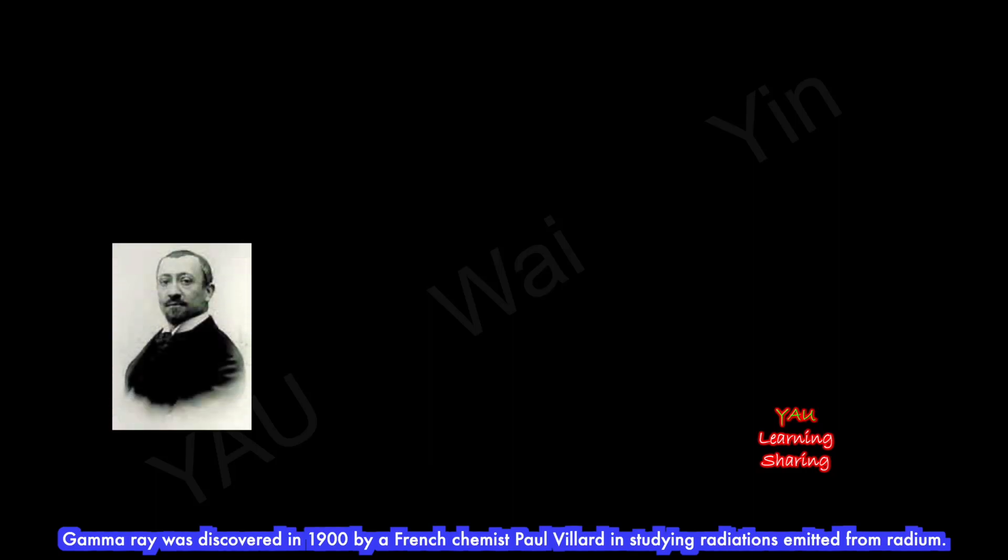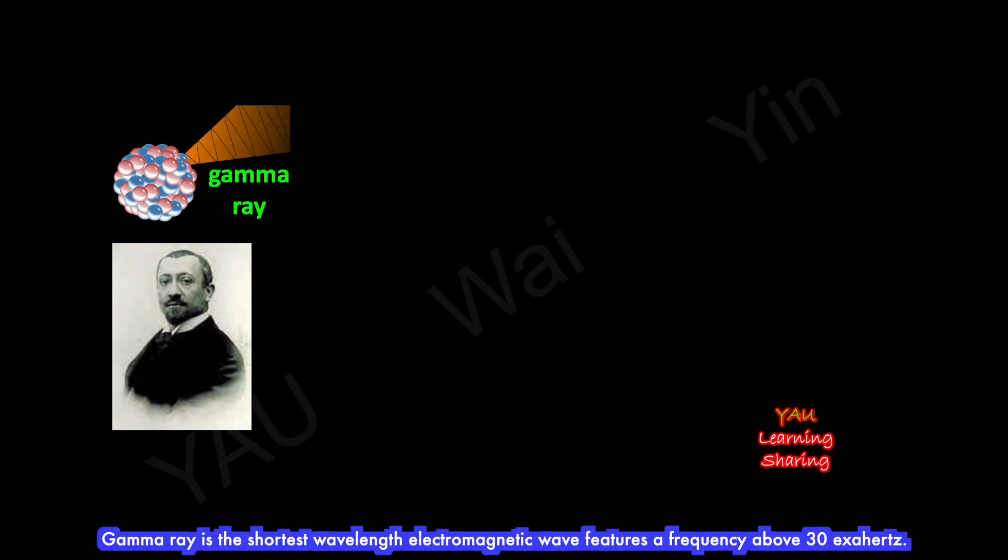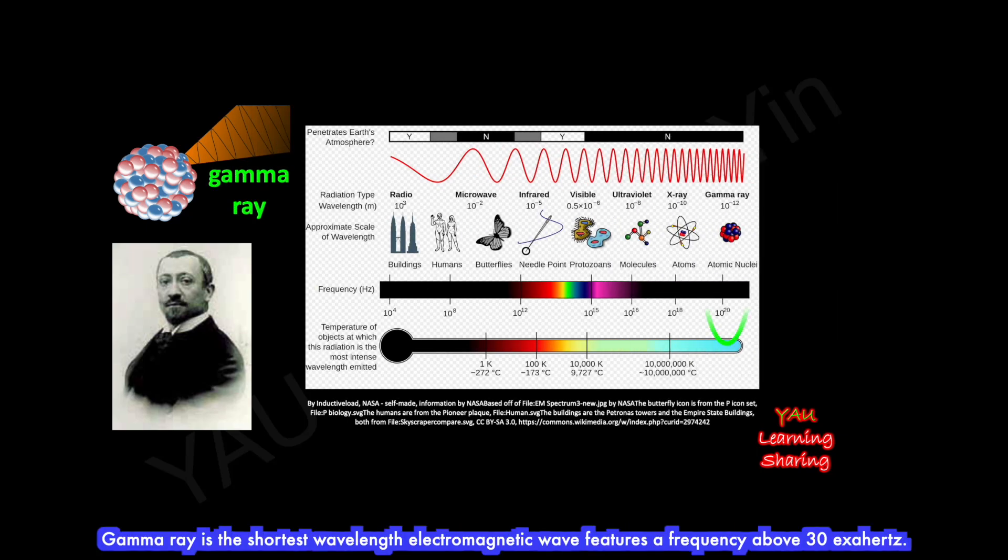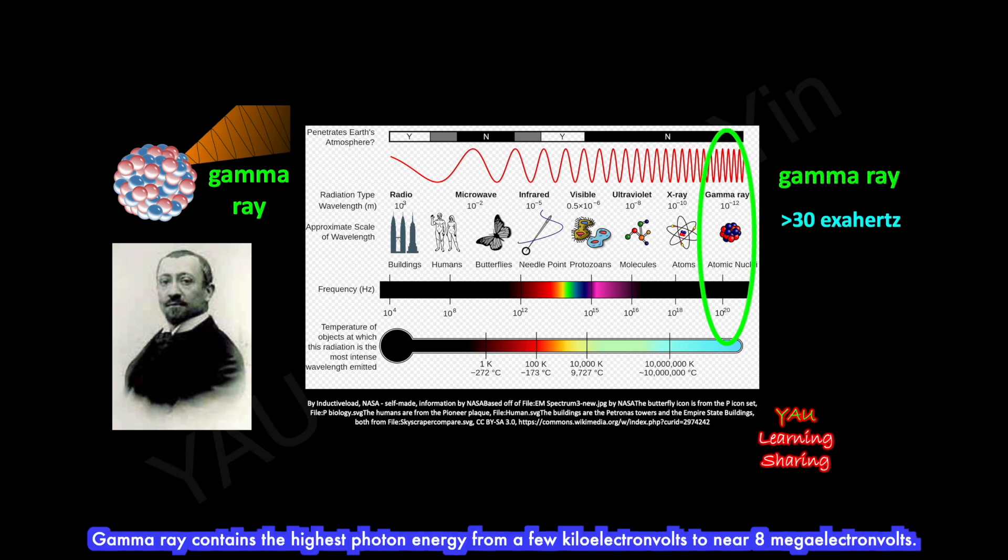Gamma-ray was discovered in 1900 by French chemist Paul Villard while studying radiations emitted from radium. Gamma-ray is the shortest wavelength electromagnetic wave, featuring a frequency above 30 exahertz. It contains the highest photon energy, from a few kiloelectronvolts to nearly 8 megaelectronvolts.